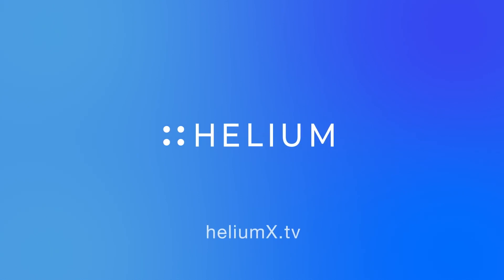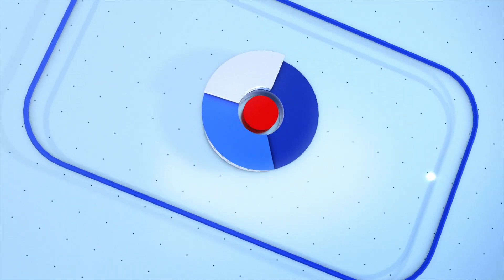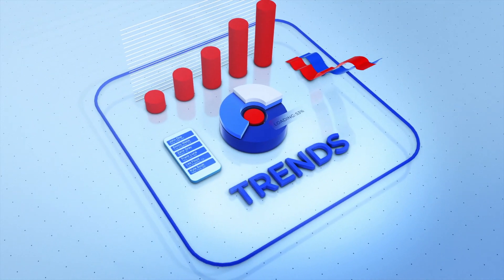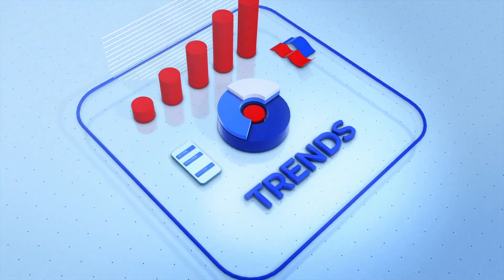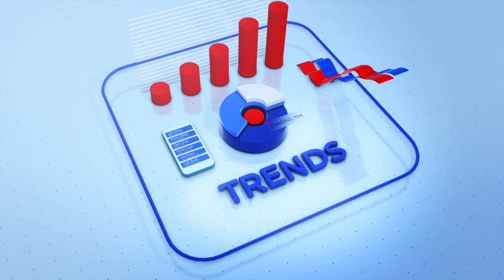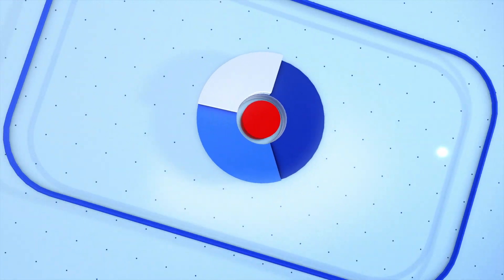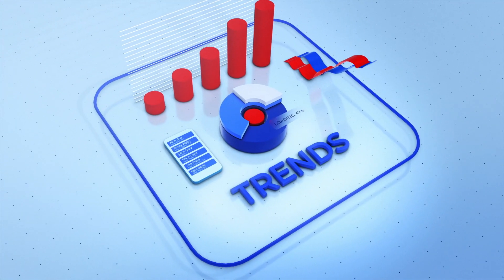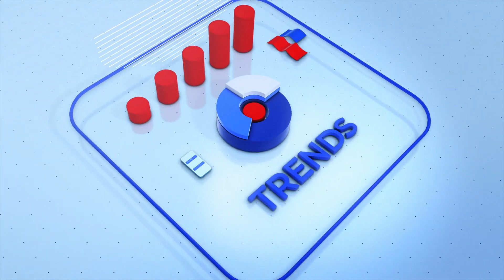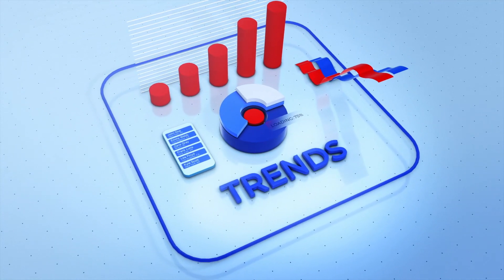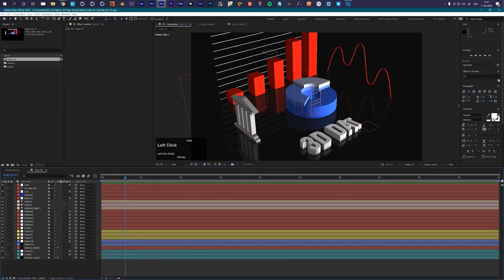Hello and welcome everybody, this is Roland from graphicinmotion.com and this is part two of our Helium 3D data visualization tutorial. In the first part we created this setup that you can see here, so I would recommend before you watch this part that you go back and watch part one. In this part we are now focusing on the animation and will create a nice build-up animation for all of these 3D elements. We already created this animation for our text and now it's time to animate the other elements in our scene.